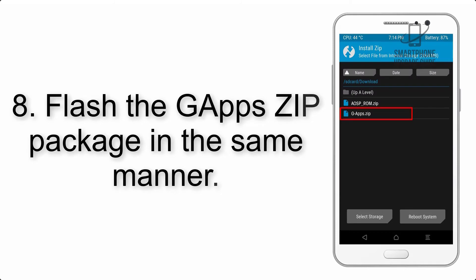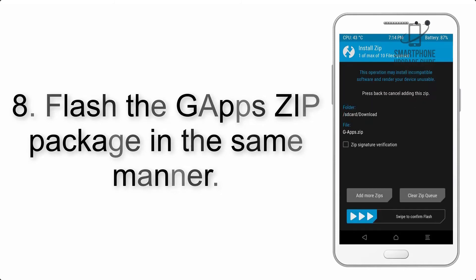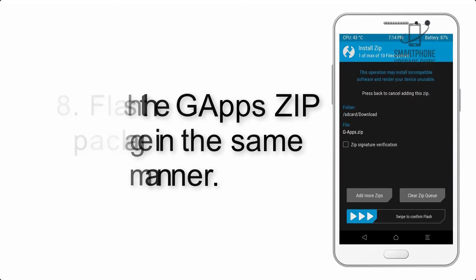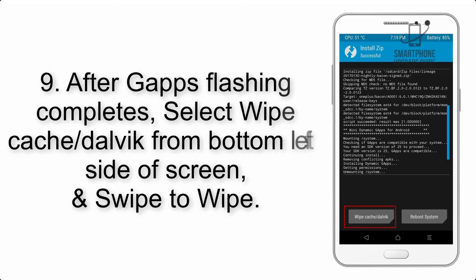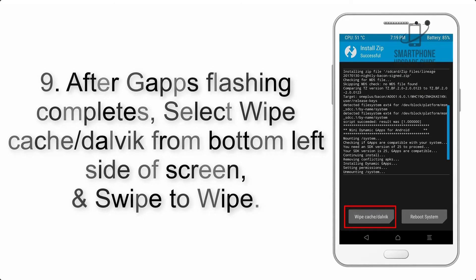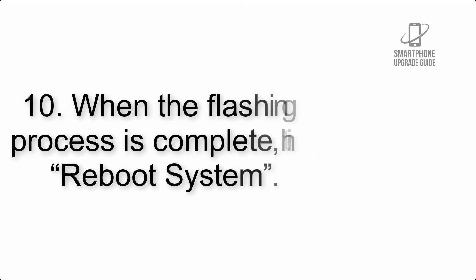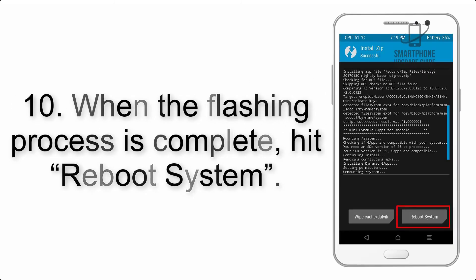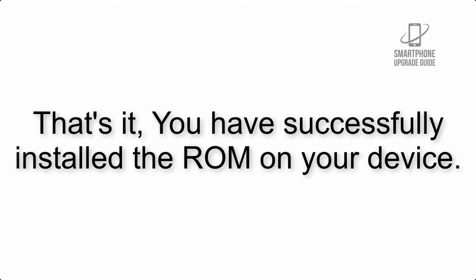Step 8: flash the GApps zip package in the same manner. Step 9: after GApps flashing completes, select Wipe Cache and Dalvik from the bottom left side of the screen and swipe to wipe. Step 10: when the flashing process is complete, hit Reboot System. That's it — you have successfully installed the ROM on your device.